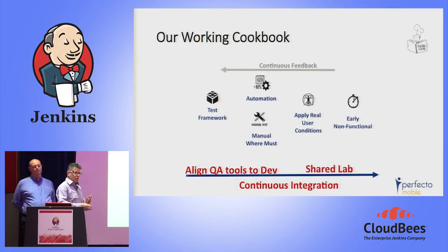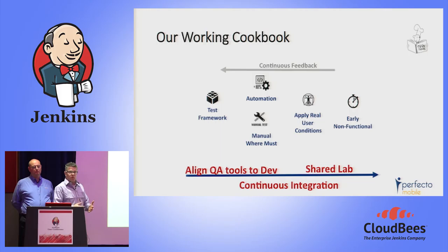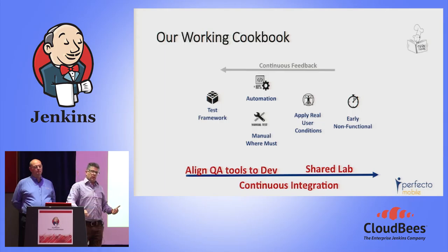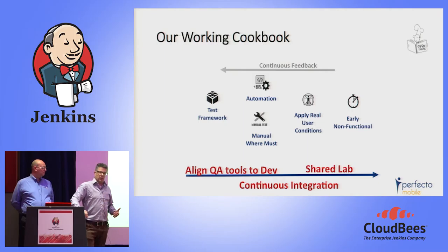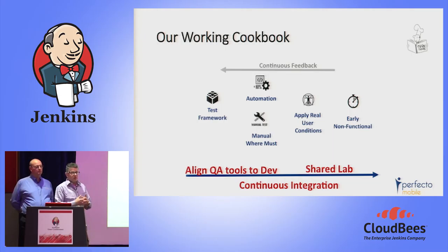If everything can tie together and work as an orchestrated process from the same environment where automation engineers and developers operate, it's not just best practice — it's the only way to eliminate the velocity gap. A shared lab is also important: different devices and operating systems behave differently, so a collaborative environment where developers and testers — possibly on the same agile team — work together is an imperative aspect of the entire workflow.